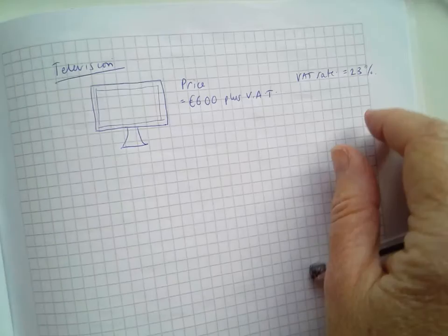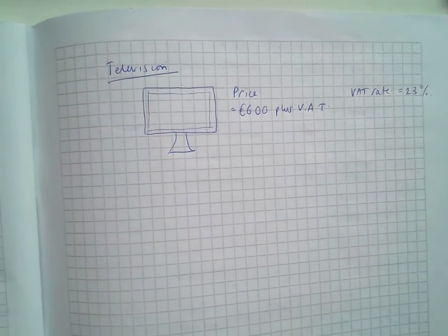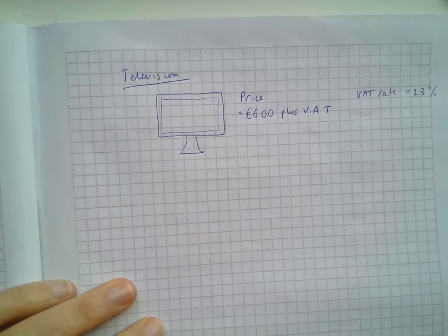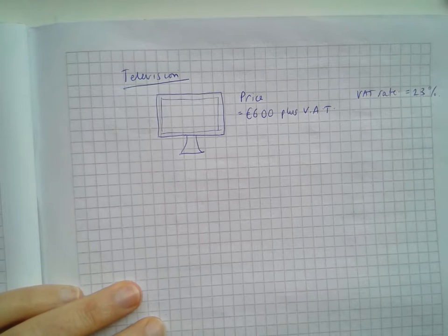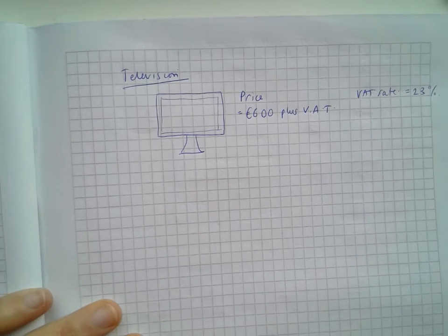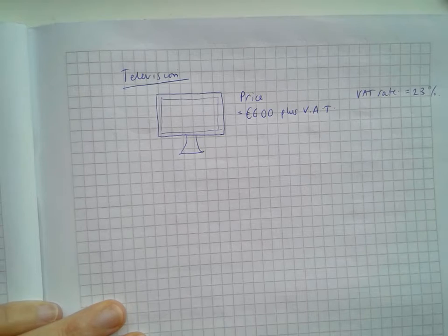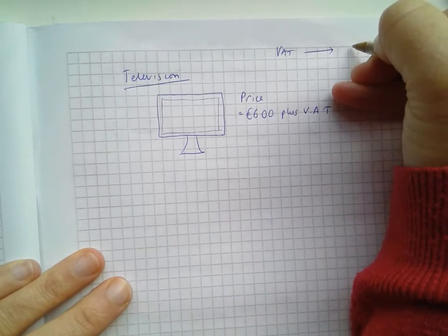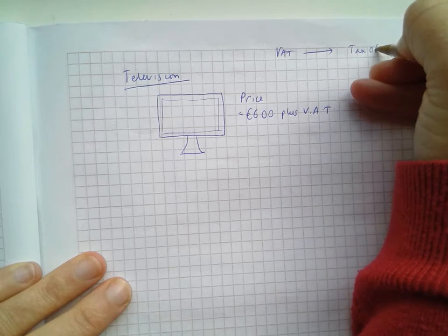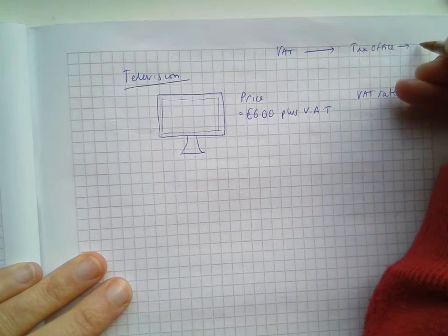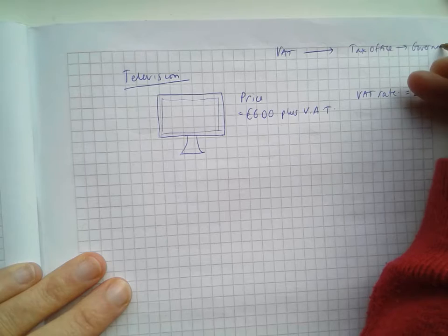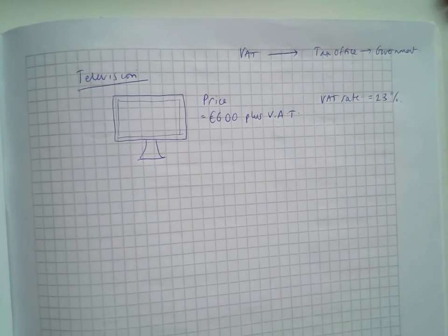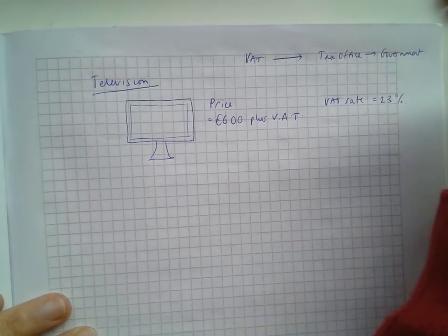Here's a television in Harvey Norman or Paris City or something, and you're told that the price of the television is €600 plus VAT — value-added tax. So basically what VAT is, it's money that goes to the taxman and the taxman gives it to the government.